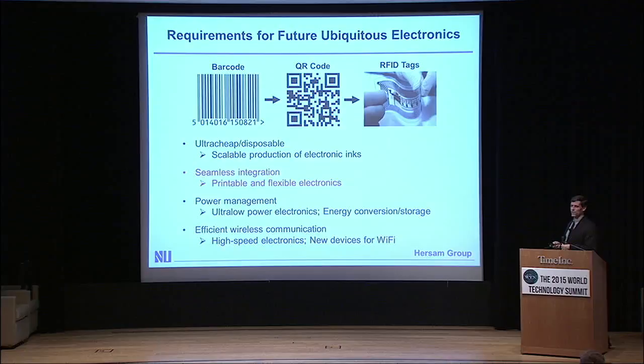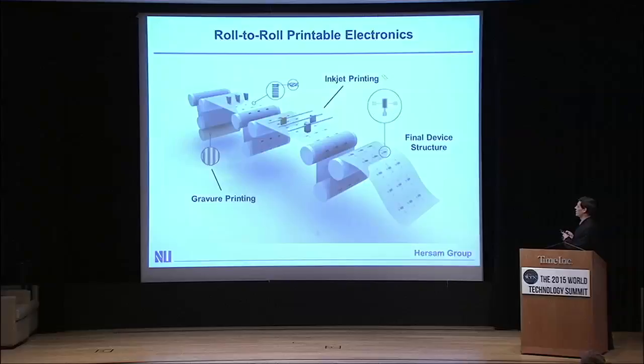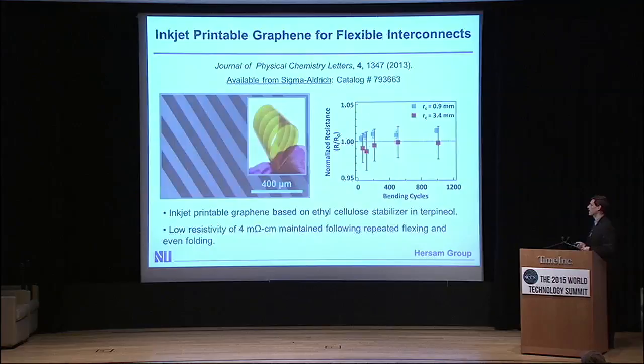What we then do is take those electronic inks and try to print them into functional electronic devices and circuits using conventional printing technology. The scheme is shown here: can we repurpose printing presses — which were very common for printing newspapers and magazines, a declining trend in the media industry — to realize functional electronics? To do that, we take those inks and print them using methods such as gravure printing or inkjet printing, and ultimately fabricate functioning electronic devices.